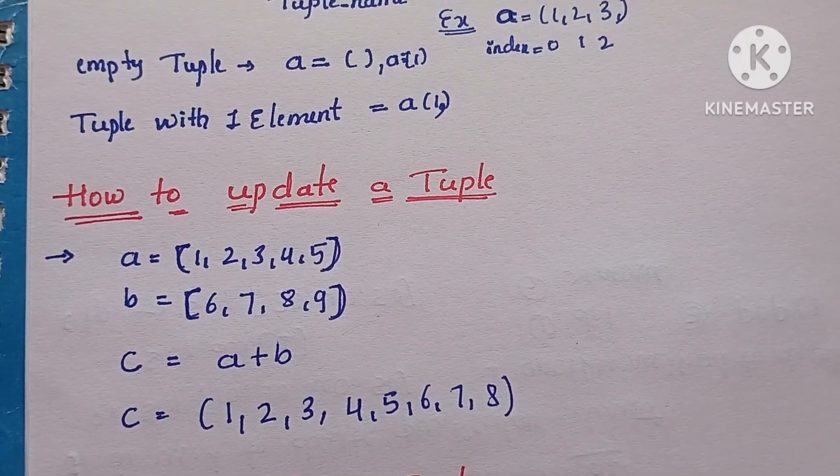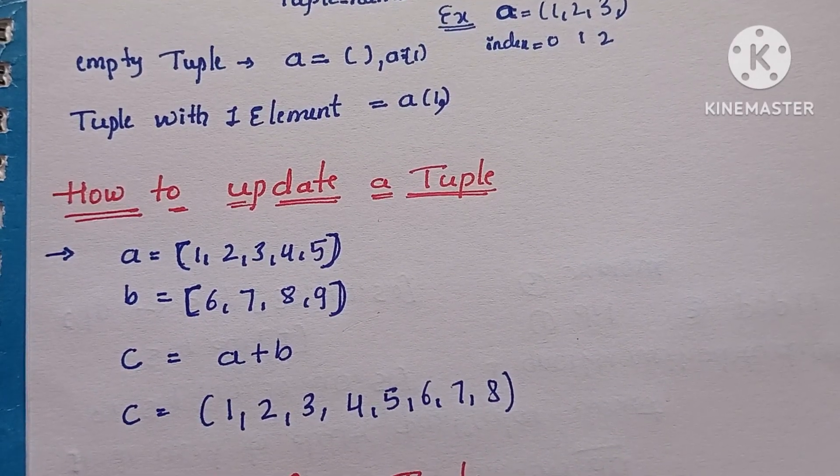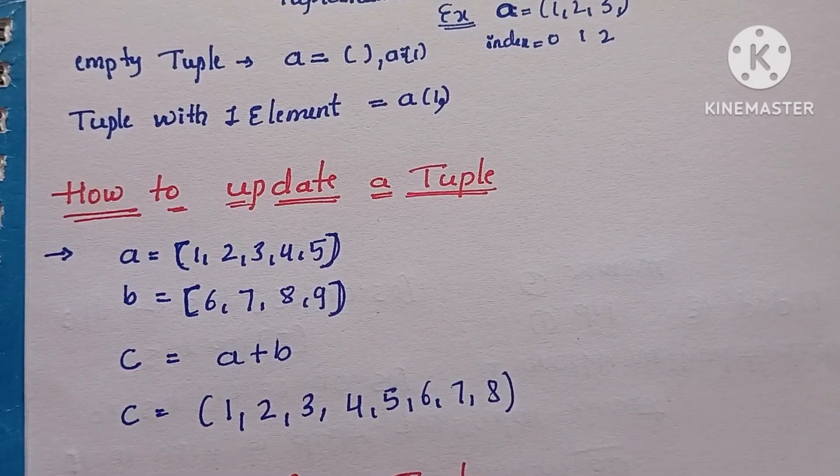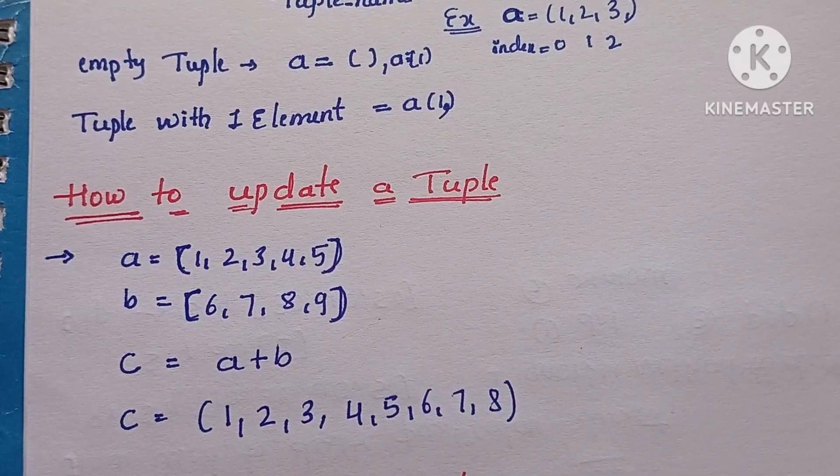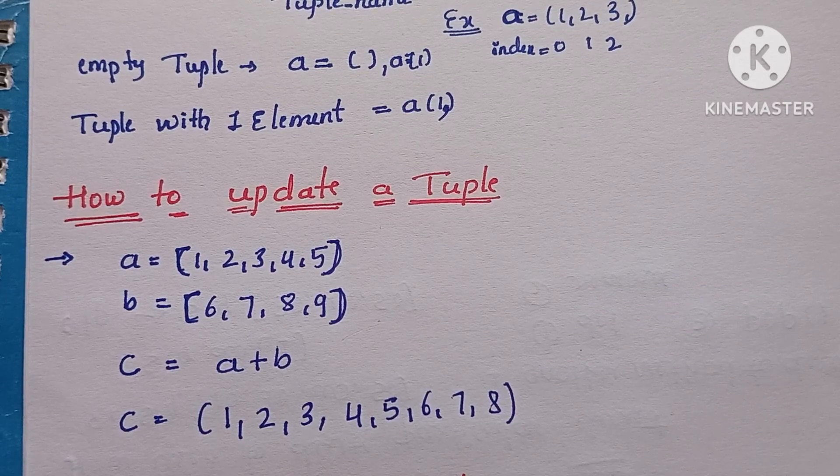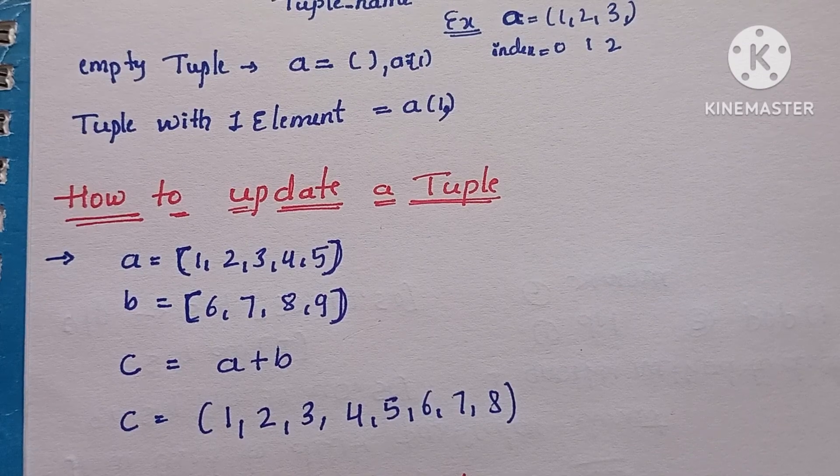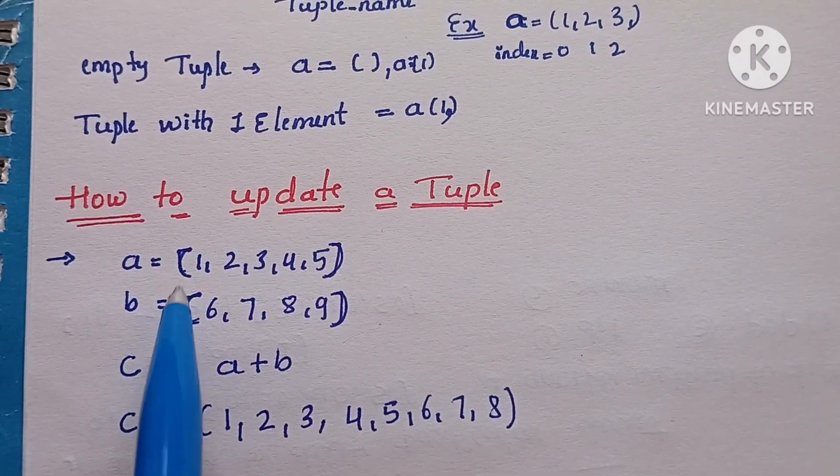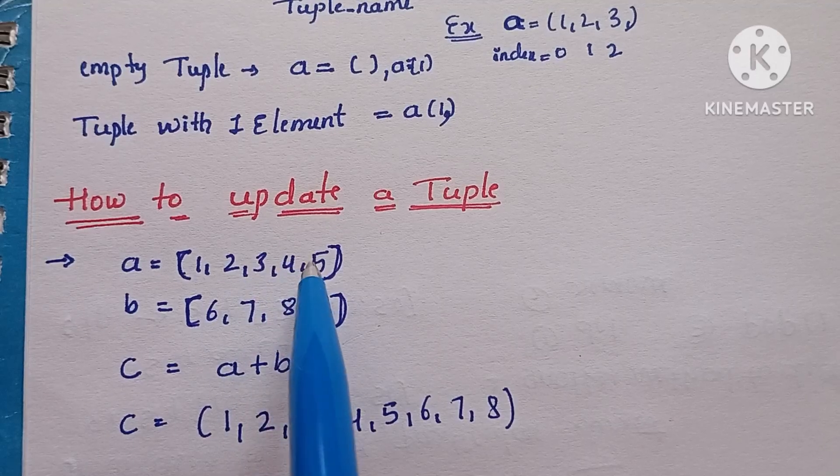Here we cannot update the elements which are existing in the same tuple, but we can use the elements or assign the elements with some more additional elements and it can be assigned to another tuple. That we can call updation. For example, a = (1, 2, 3, 4, 5).